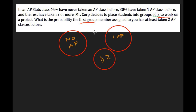It's not really a Venn diagram problem where there's an overlap. The question is whether it's geometric or binomial. All of these groups — zero AP, one AP, two or more AP — together represent all the students. That represents all the different possibilities, which sum to one.